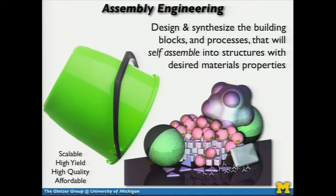In assembly engineering, we start with building blocks — they could be atoms, molecules, or larger particles — that have the properties we want, and we put them together to get the kinds of structures we want. To do that, the processes we define must be scalable. We have to understand exactly what our building blocks are, how they interact, how they come together with high yield in a reproducible way, with high quality, few defects, and in an affordable way.